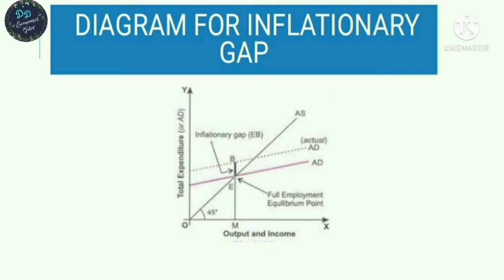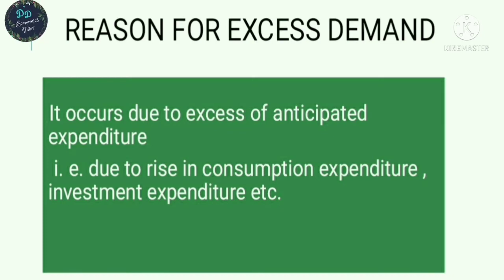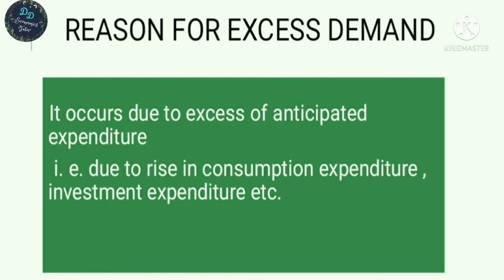What are the main reasons for excess demand? An increase in money supply in the economy leads to excess demand. This is due to increases in household sector consumption expenditure, investment expenditure from the producer sector, government expenditure, and an increase in exports from the rest of the world. These four components of aggregate demand are the main causes of excess demand.